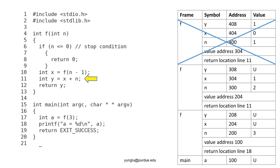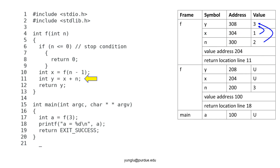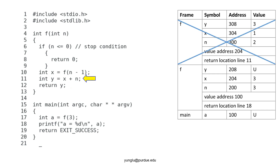Line 11 adds the values of x and n. Their values are 1 and 2 respectively. The value of y is 3. Line 12 returns the value of y. The value address is 204. Thus, the value at address 204 is modified to 3. Then, the program continues from line 11 and the top frame is popped.